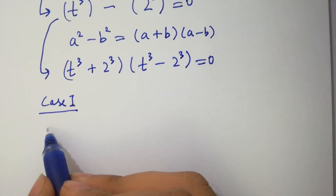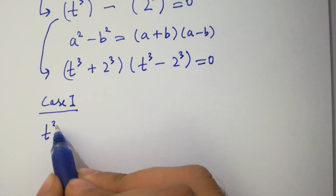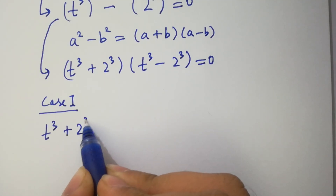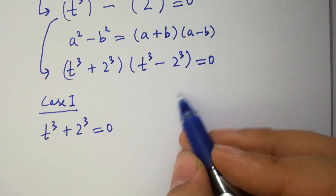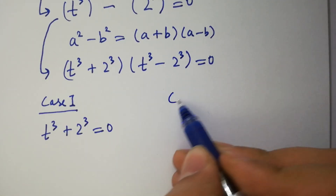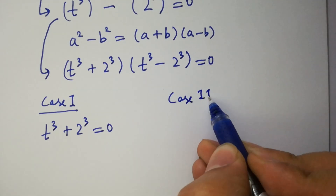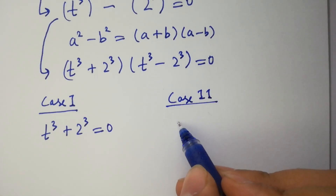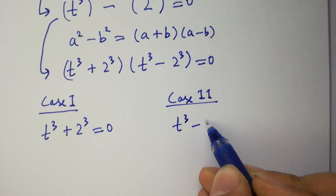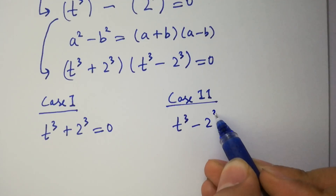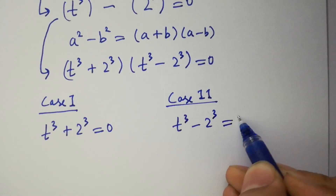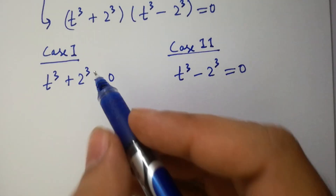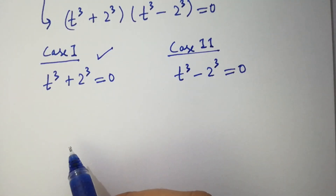Case 1: t cubed plus 2 cubed equal to 0. And Case 2: t cubed minus 2 cubed equal to 0. First of all, I am going to solve Case 1.